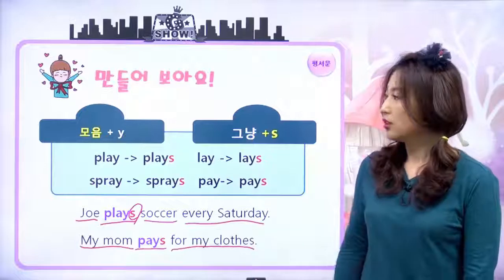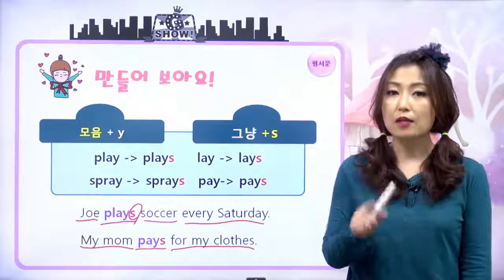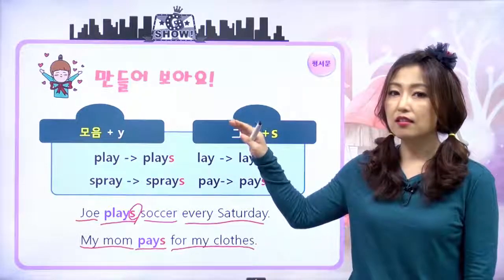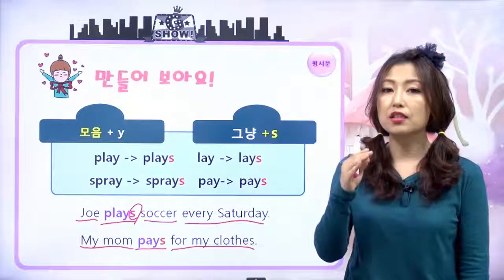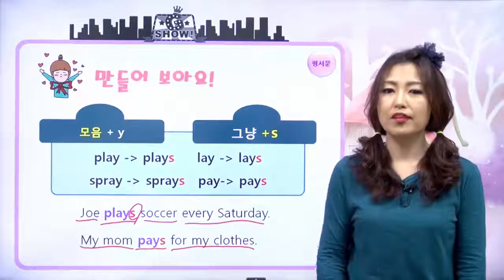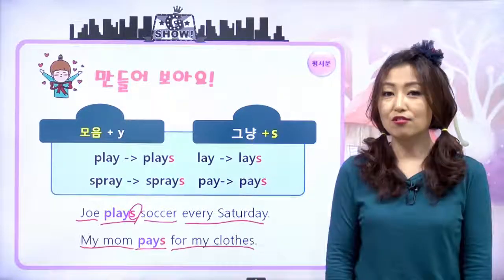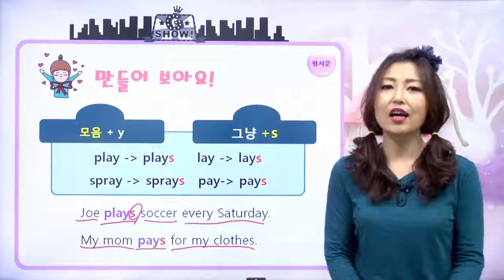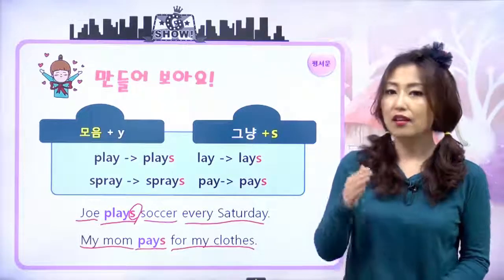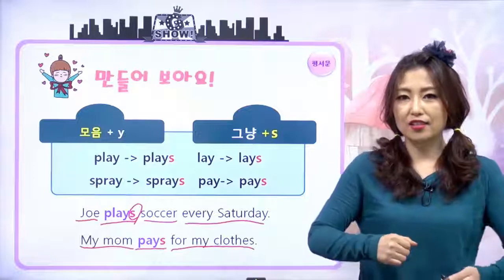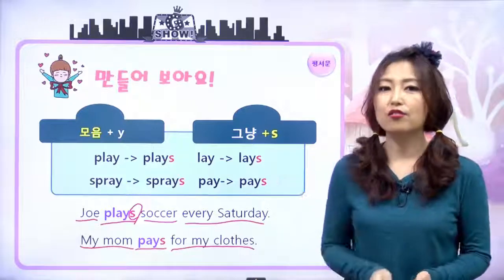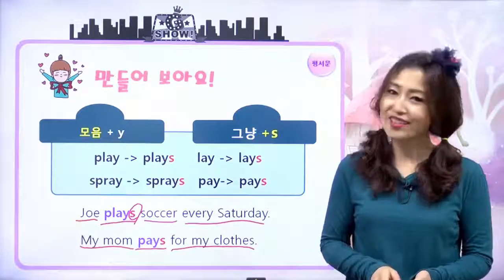그러면 정리하면, 주어가 뭘 때? 3인칭 단수 현재일 때 동사에 뭐가 붙어요? s나 es. 그런데 s나 es를 붙는 법칙이나 방식은 지금 선생님하고 조목조목 살펴본 것처럼 그렇게 붙이면 되는 거예요. 오늘은 딱 하나만 기억하면 돼요. 삼단현. 삼단현이 주어가 될 때 동사가 어떻게 돼요? s나 es가 붙어요. 이렇게 붙어서 모양이 변화되는 거죠. 이 내용 잘 기억하고 선생님은 다음 시간에 또 만나요. Goodbye, everyone. See you next time.